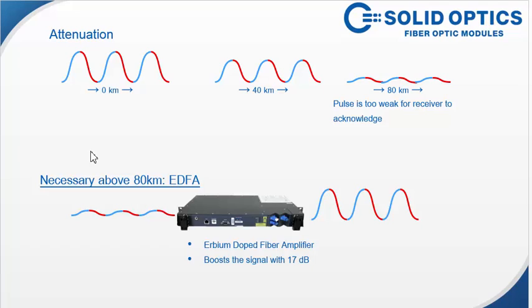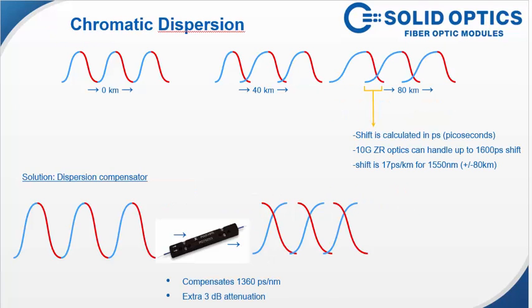So what you need to go above 80 km is an EDFA which amplifies or pumps up the signal again. There is another thing which is also important if you are having transmission above 80 km and that is dispersion.